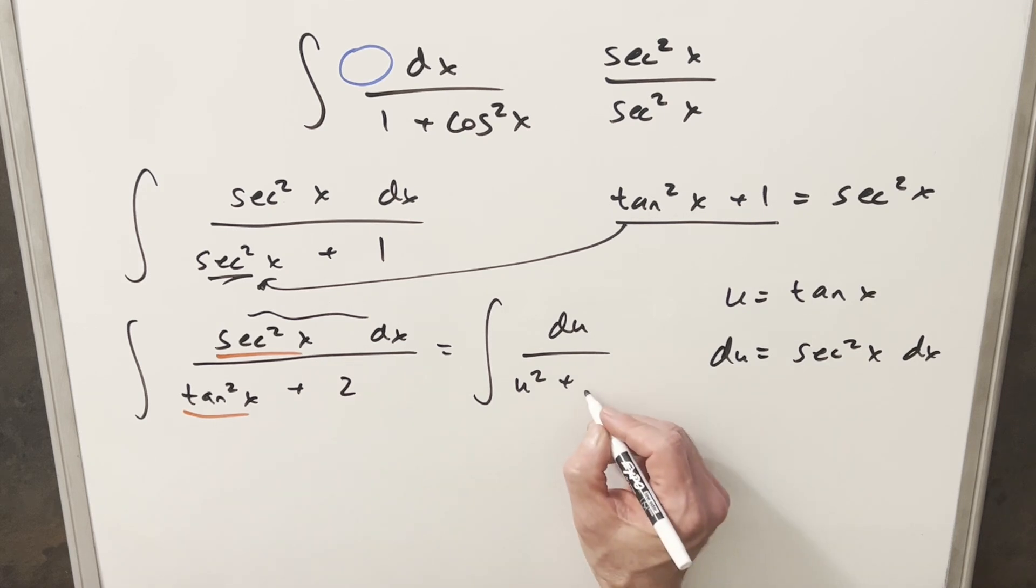We end up with just du over u squared plus 2. But for 2, I can write this as square root of 2 all squared. Now this integral is in the form for arctan. Let's just look at that formula really quick.